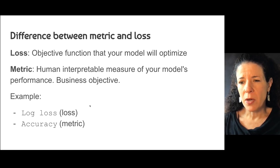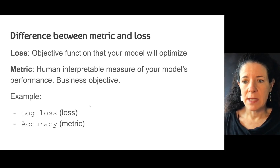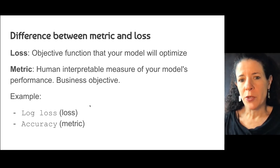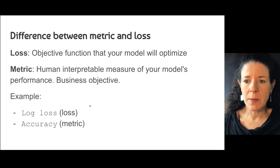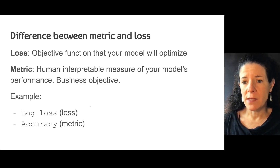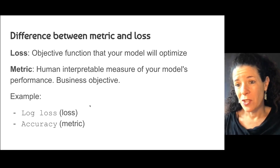Now, if you go to your boss and say 'I have 95% accuracy,' he has a very clear idea of what you're talking about. So the difference between a metric and a loss is just that the metric is a humanly interpretable measure of your model — something that more people are going to be able to understand, and hopefully in many cases also has a business objective. For example, log loss is a loss — it's hard to understand — and accuracy is a metric.